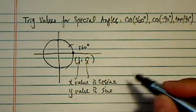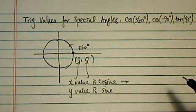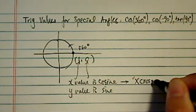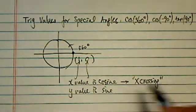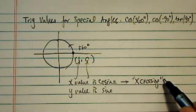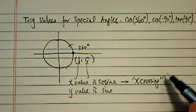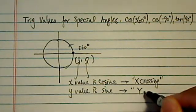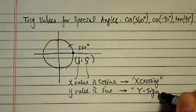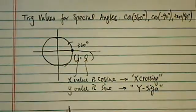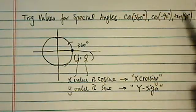Now how on earth are you going to remember that? I had a student a while back, and we came up with this crazy way to remember it. X value is cosine sounds like x crossing or crossing, maybe pedestrian crossing sign. Y value is the sine. We came up with this saying, why do you want sign of paper? Y sign, crossing.